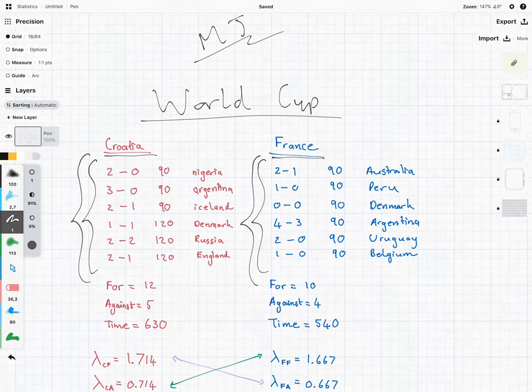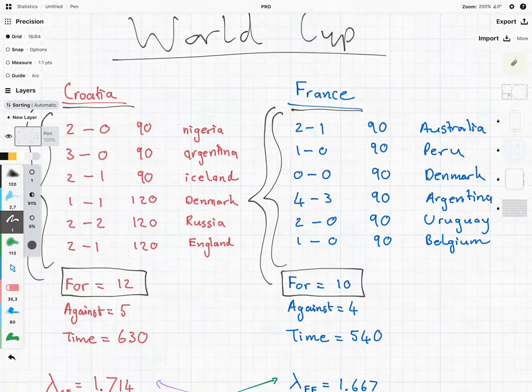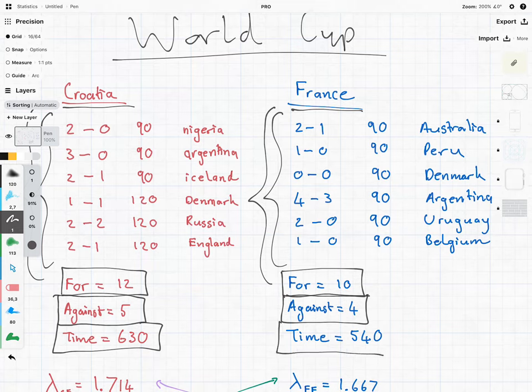So to do that, I've calculated three things for each team. The amount of goals that they scored in the World Cup so far, so it's been 12 for Croatia, 10 for France. The amount of goals that they've conceded, that has been 5 for Croatia and 4 for France. I've then also calculated the amount of time played, and that's been 630 for Croatia and 540 for France.